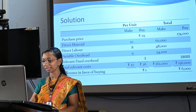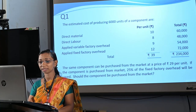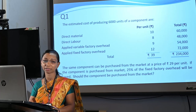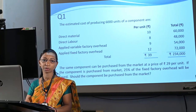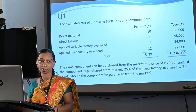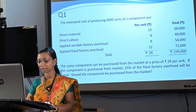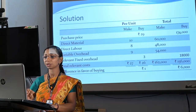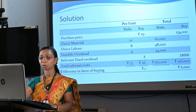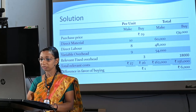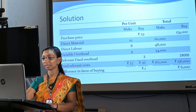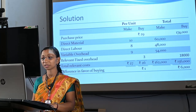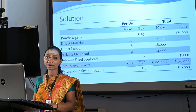In the question, it is said that if we purchase the product from market, 25% of the fixed factory overhead will be saved. 25% of Rs. 12 is Rs. 3 per unit can be saved. Therefore, relevant fixed factory overhead is Rs. 3 per unit, at a total cost of Rs. 18,000. Therefore, the net cost of purchase is Rs. 29 minus Rs. 3, that is Rs. 26 per unit, and the total cost is Rs. 1,74,000 minus Rs. 18,000, that is Rs. 1,56,000.